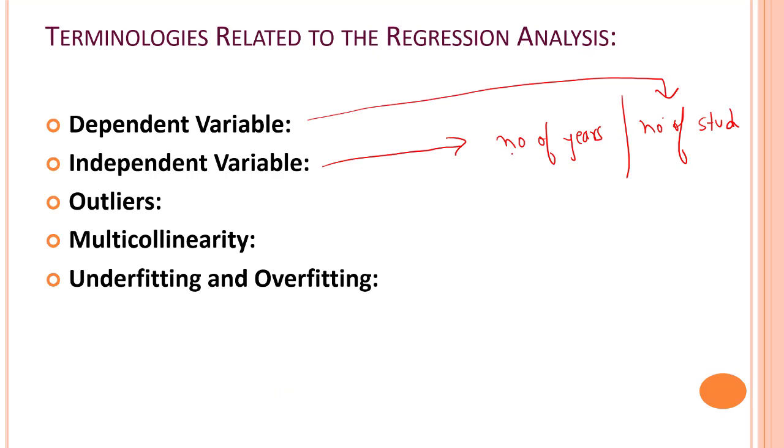This value is totally independent and whatever we are predicting is the dependent variable. Once we look into the equation for linear regression, it will make more and more sense. The main factor in regression analysis which we want to predict or understand is called a dependent variable. It is also called the target variable.